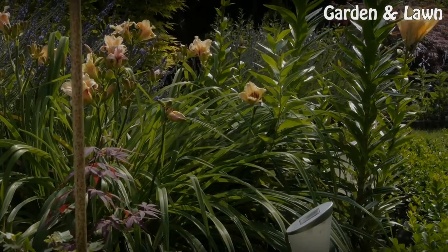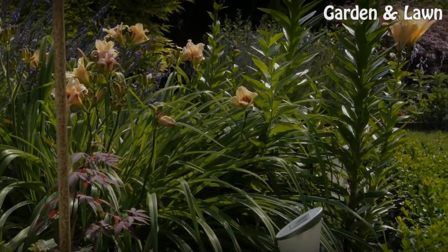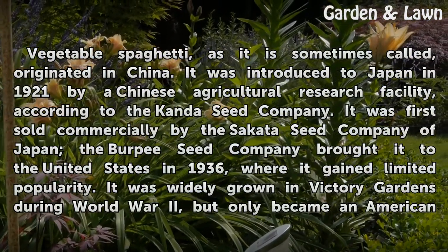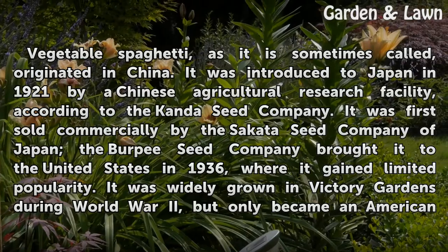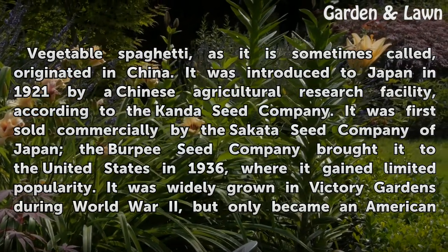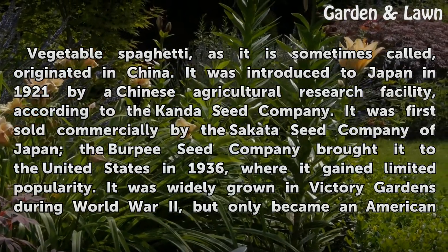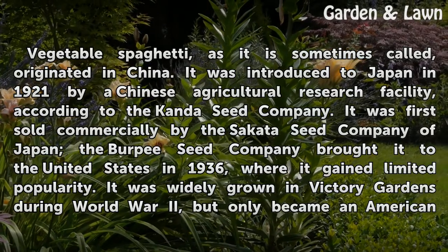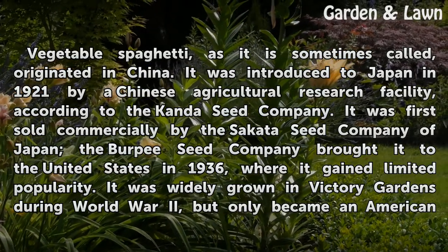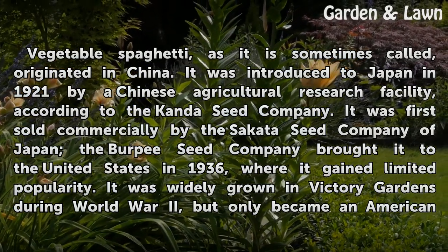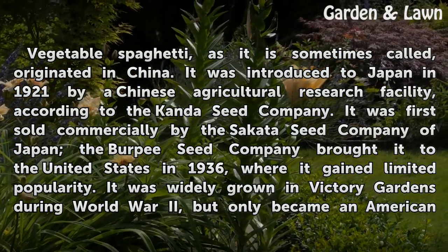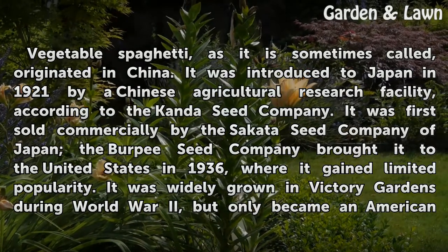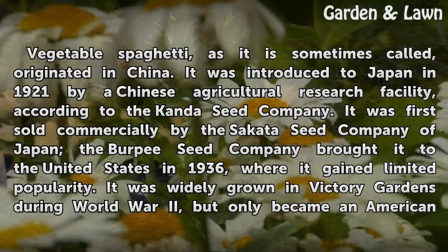History. Vegetable spaghetti, as it is sometimes called, originated in China. It was introduced to Japan in 1921 by a Chinese agricultural research facility, according to the Kanda Seed Company. It was first sold commercially by the Sakata Seed Company of Japan.